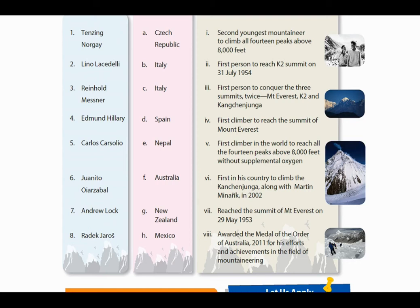Another mountaineer from Spain was the first person to conquer three summits — Mount Everest, K2, and Kangchenjunga — twice. Andrew Lock from Australia was awarded the Medal of the Order of Australia in 2011 for his efforts and achievements in mountaineering. Radek Jaroš from the Czech Republic was the first in his country to climb Kangchenjunga, along with Martin Minář, in 2002.